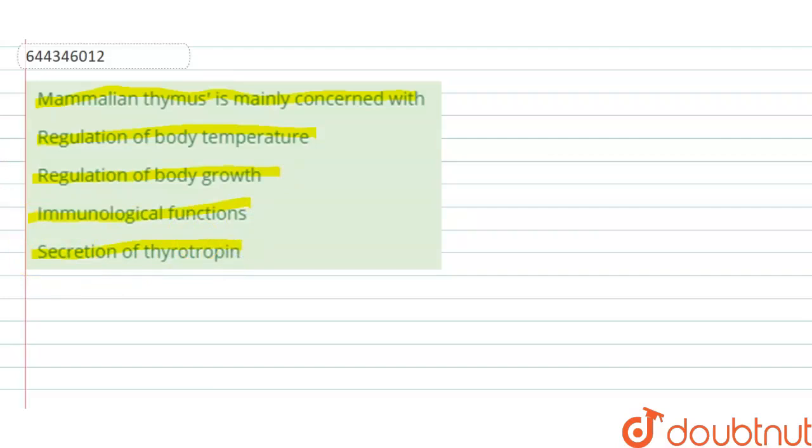In this question, we have to tell about the function of thymus. So thymus is a gland which is present in the chest between lungs. It is present in chest and between the lungs.